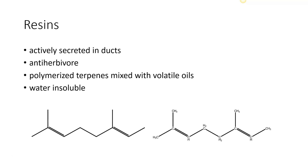A terpene is made up of two isoprene units. These two five-carbon units together give you a 10-carbon unit. You can see the stick drawing on the left-hand side, and on the right-hand side it shows where the carbons and the hydrogens are. They are hydrocarbons.